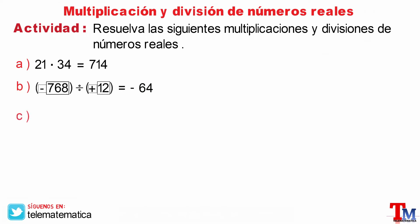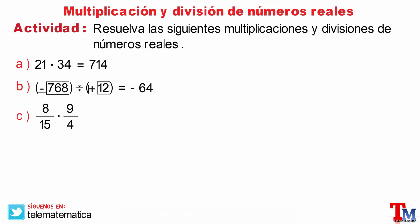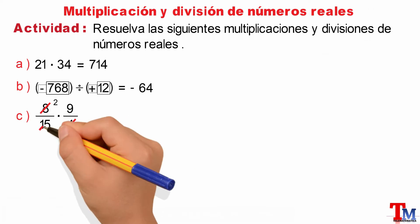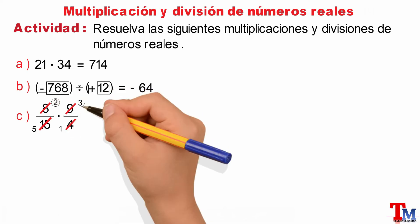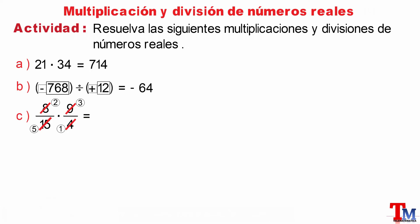Literal C: 8 fifteenths multiplied by 9 quarters. In this case, we have the multiplication of rational numbers — basically, of fractions. We will start by simplifying everything that can be simplified so that we can work with smaller numbers. Multiplying numerator by numerator and denominator by denominator, the result is 6 fifteenths.